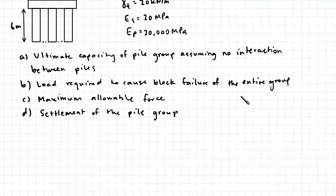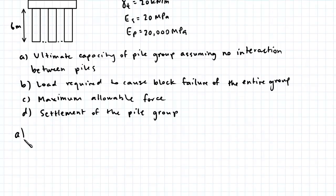So let's start off with part A. The ultimate capacity of one pile, PU, is equal to the sum of the total shaft resistance and the total base resistance.